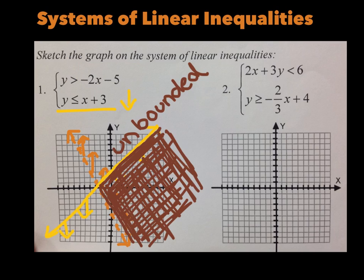Now we have 2x plus 3y is less than 6. You could rearrange to slope-intercept form or just use intercepts. I know this is a positive y and it's less than, so rearranging wouldn't switch the sign. Y is less than goes down and it will be a dashed line. When x is 0, y is 2. When y is 0, x is 3. Connect those with a dashed line and shade down — I'll put little down arrows but not shade yet.